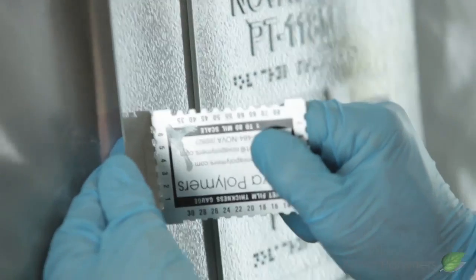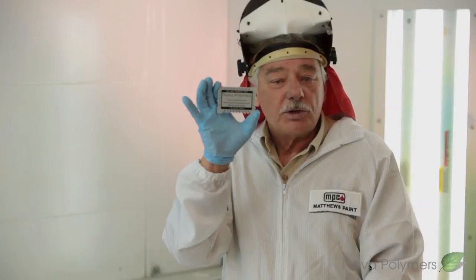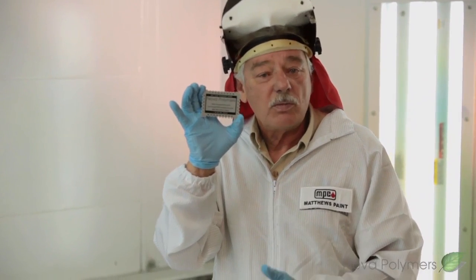When you put one of these edges into a wet film, it'll leave an impression in the paint film. And when you remove the gauge, it'll tell you what the wet film is.